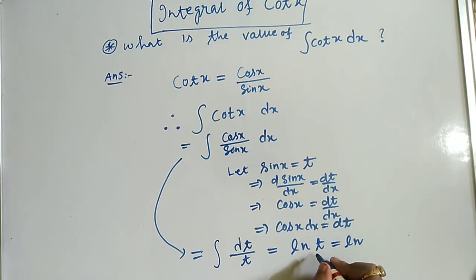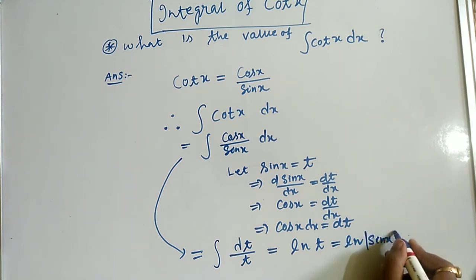t is sin(x). As you know, after integration we always take a constant, which is the constant of integration, an arbitrary constant. The constant is c. The answer, or the value of the integration of cot(x), is ln(sin(x)) plus c.